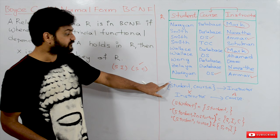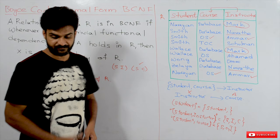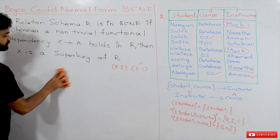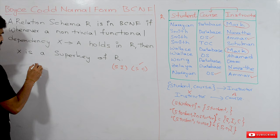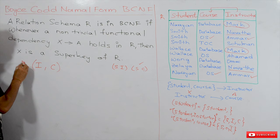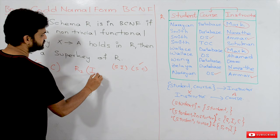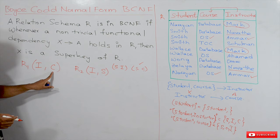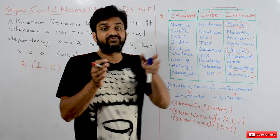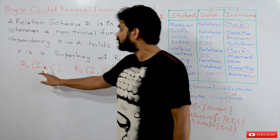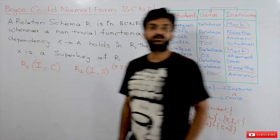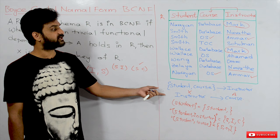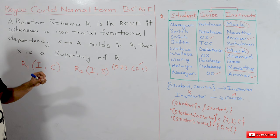How do we decompose? The decomposition based on BCNF gives us two tables: the first is Instructor, Course, and the second is Instructor, Student. The original three-attribute relation is divided into these two decompositions based on the violating functional dependency.